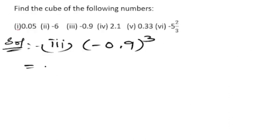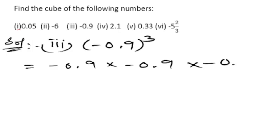Now for minus 0.9 whole cube: we multiply minus 0.9 into minus 0.9 into minus 0.9. Minus into minus is plus: 9 nines are 81.